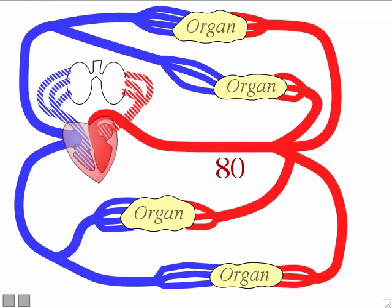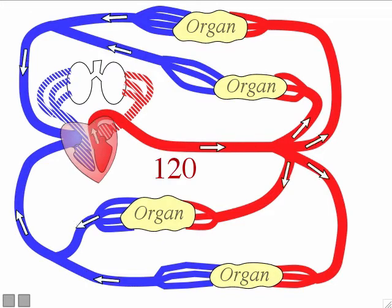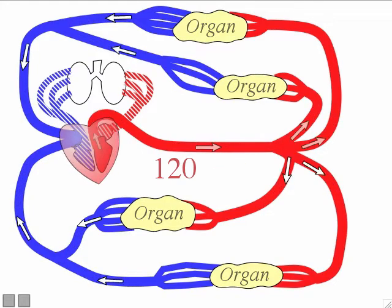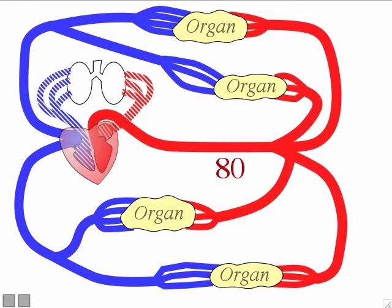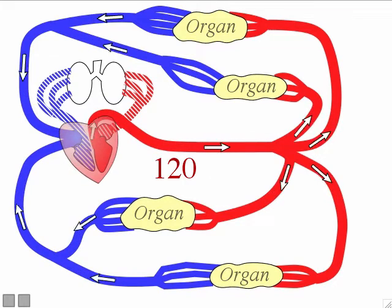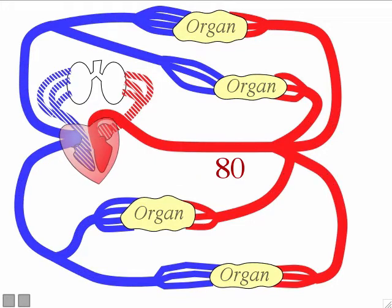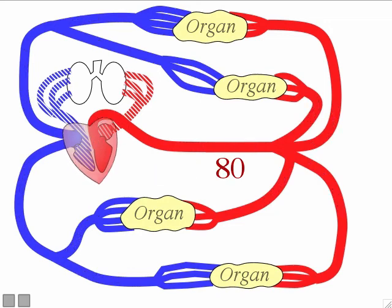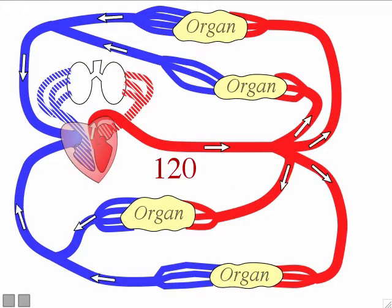With every cardiac cycle, your ventricles contract and then relax, so with each cardiac cycle your blood pressure goes up and down. Each cardiac cycle makes your blood pressure go to the systolic value, then the diastolic value. If the person has average blood pressure, with every cardiac cycle their blood pressure goes 120, 80, then 120, 80 again, with each and every cardiac cycle.